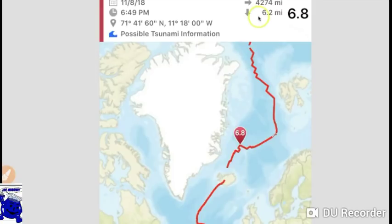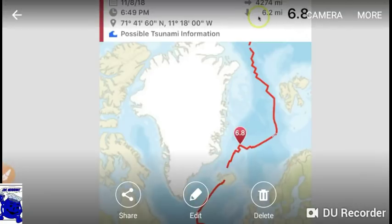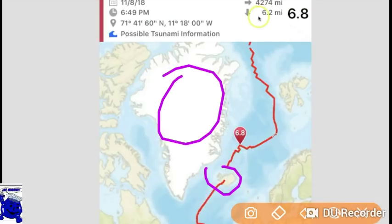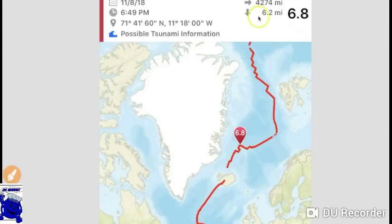All right, short and sweet guys. We had a 6.8 earthquake in the Arctic Circle. Check it out—up there where we shouldn't really be having these big ones. This right here is Greenland, this is Iceland, so it's north of Iceland, east of Greenland.